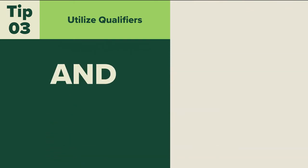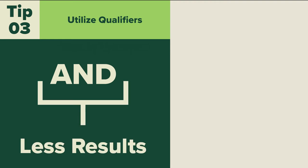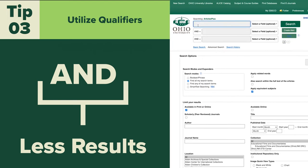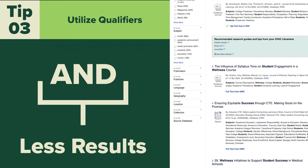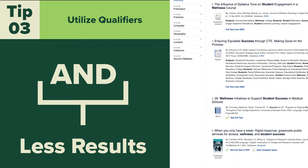Use AND to reduce the number of results by letting the database know that two concepts must be together, such as 'wellness AND student success.' These two words must appear together somewhere in the article, book, or document for it to appear as a search result.